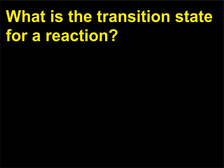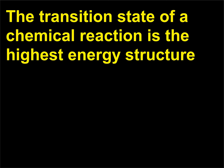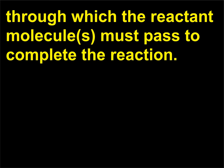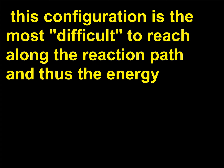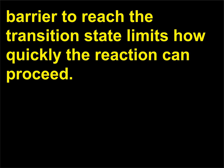What is the transition state for a reaction? The transition state of a chemical reaction is the highest energy structure through which the reactant molecule or molecules must pass to complete the reaction. Since this is the highest energy point along the path of the reaction, this configuration is the most difficult to reach along the reaction path, and thus the energy barrier to reach the transition state limits how quickly the reaction can proceed.